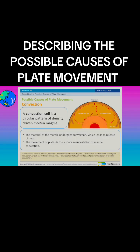A convection cell is a circular pattern of density-driven molten magma. The material of the mantle undergoes convection, which leads to release of heat. The movement of plates is the surface manifestation of mantle convection.